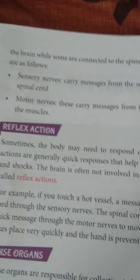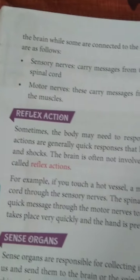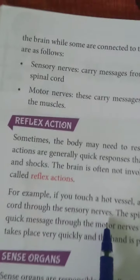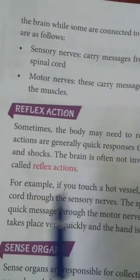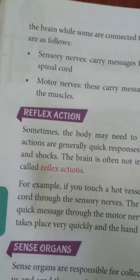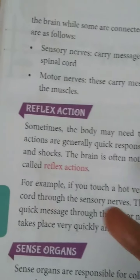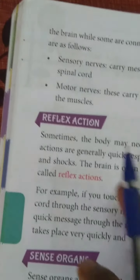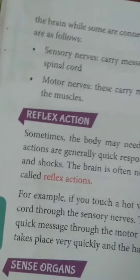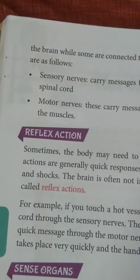They have given the example of a hot vessel. If we touch a hot vessel, the message is quickly sent to the spinal cord through the sensory nerves. The spinal cord immediately responds with a quick message. Just as we touch it, suddenly we remove our hand — that fast. It responds quickly and gives the message through the motor nerves, and we move our hand away. That reaction takes place very quickly and the hand is prevented from burning.